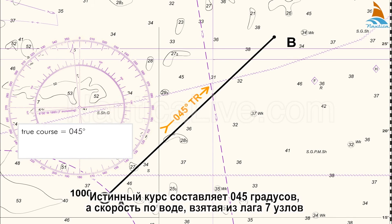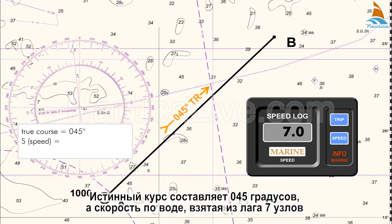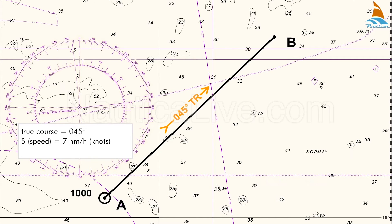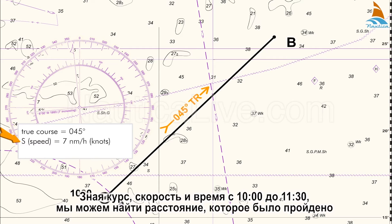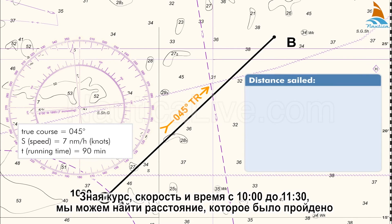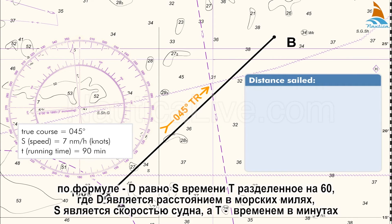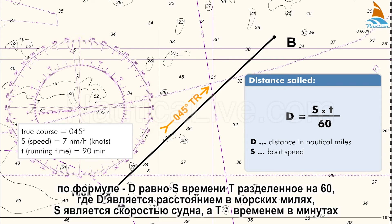The true course is 045 degrees, and the speed through the water taken from the speed log is 7 knots. Knowing the course, the speed, and the running time from 10 a.m. to 11:30 a.m., we can find the distance sailed using the formula where D equals S times T divided by 60, where D is the distance in nautical miles, S is the boat speed, and T is the time in minutes.